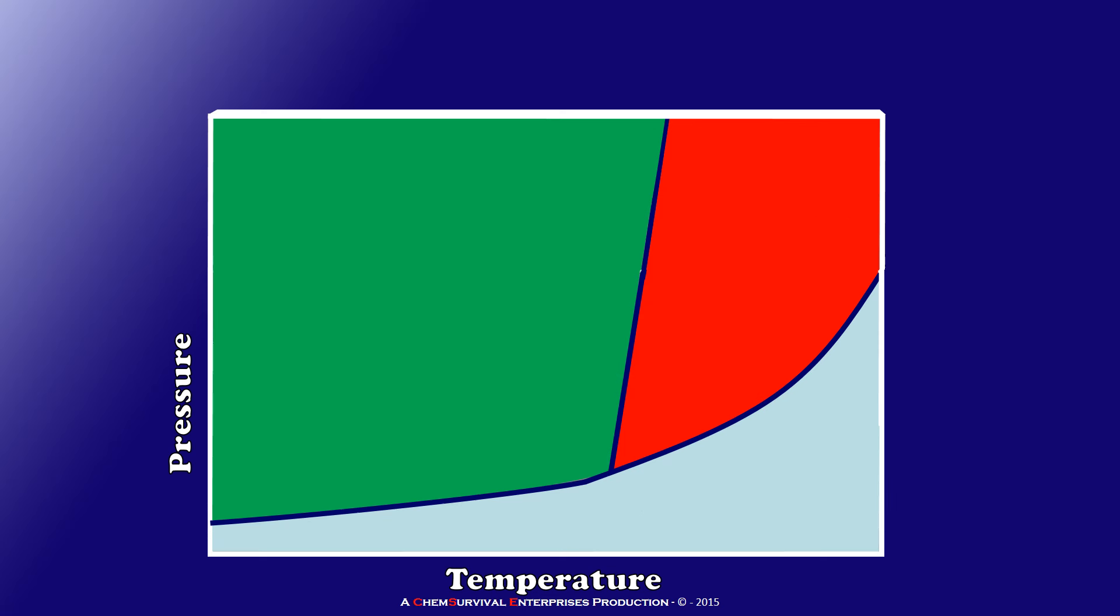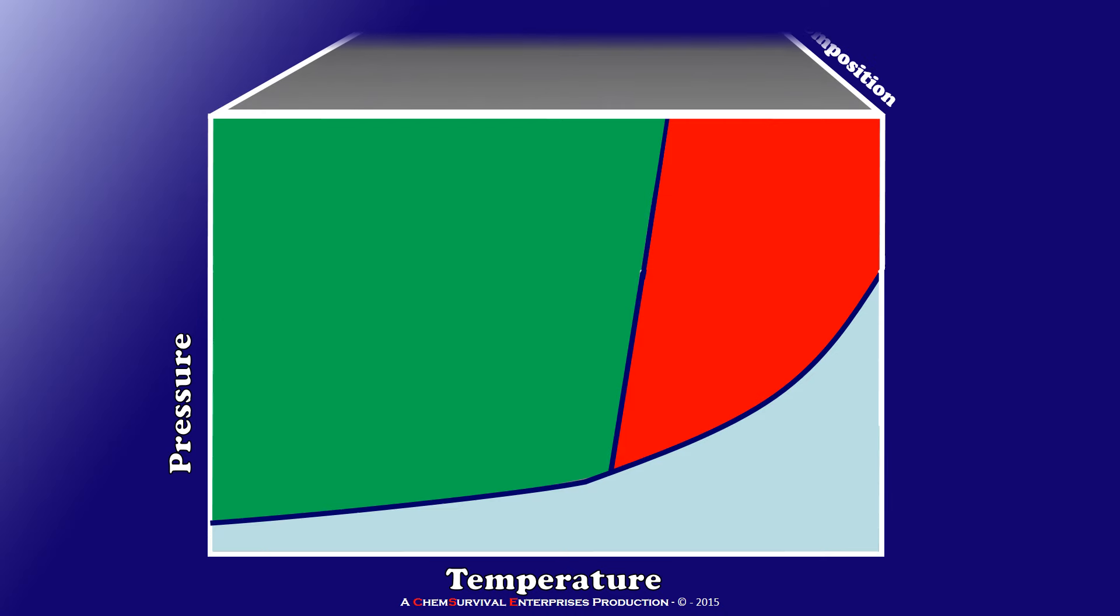Instead let's project a third axis into and out of the plane of your screen, and we'll call that axis composition. So now I've created a three-dimensional plot in Cartesian space. If I want to look at the effect of composition on the temperature of transitions at any given pressure, I simply have to choose one pressure. Let's choose one atmosphere since that's the pressure we typically work at in lab.